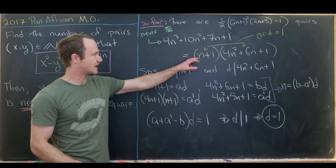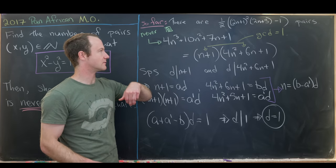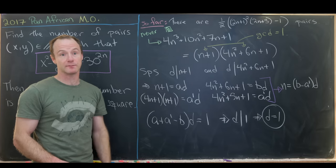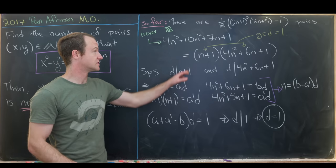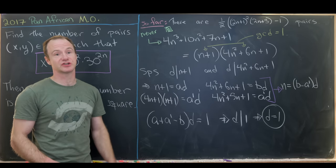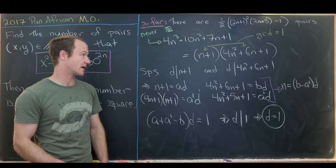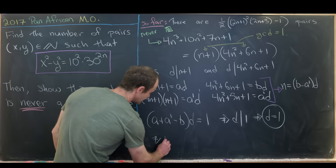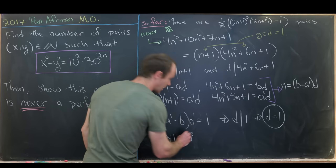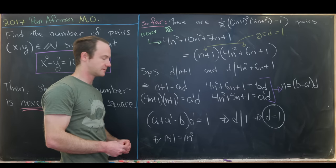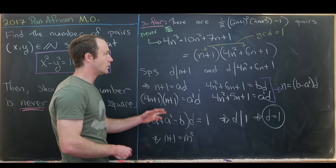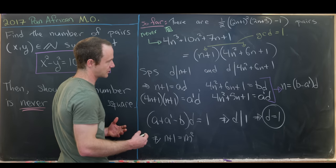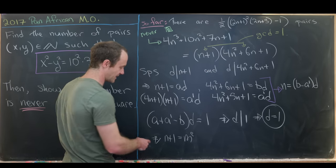Since the two factors are relatively prime and we're working by contradiction — suppose their product is a perfect square — then each factor must individually be a perfect square. So n+1 = m² and 4n² + 6n + 1 = k² for some integers m and k.